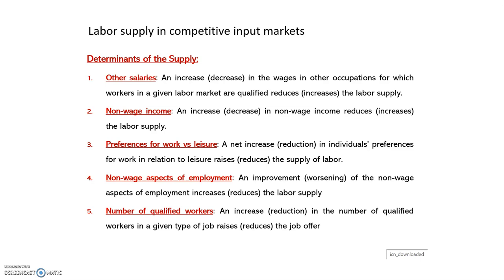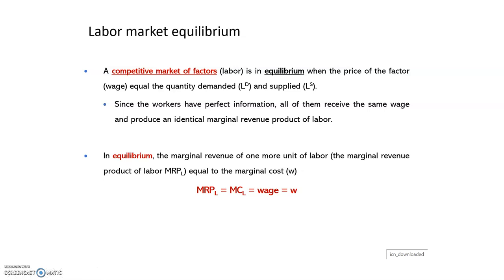The fifth determinant is the number of qualified workers. If there is an increase in the number of qualified workers for a given type of job, it will increase the labor supply. For example, if more people decide to study STEM degrees — science, technology, engineering, and mathematics — there will be an increase in the number of workers wanting to work in that sector.